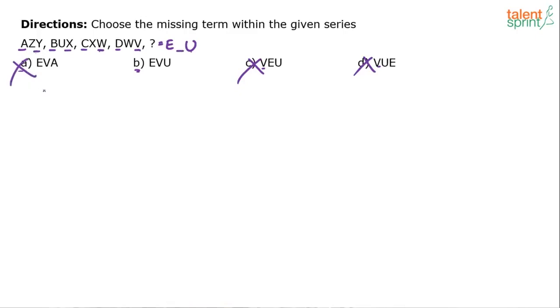If you look at option A, the last letter here is A. So only option left out is B and hence E, V, U is the answer there. E, V, U is the final answer.